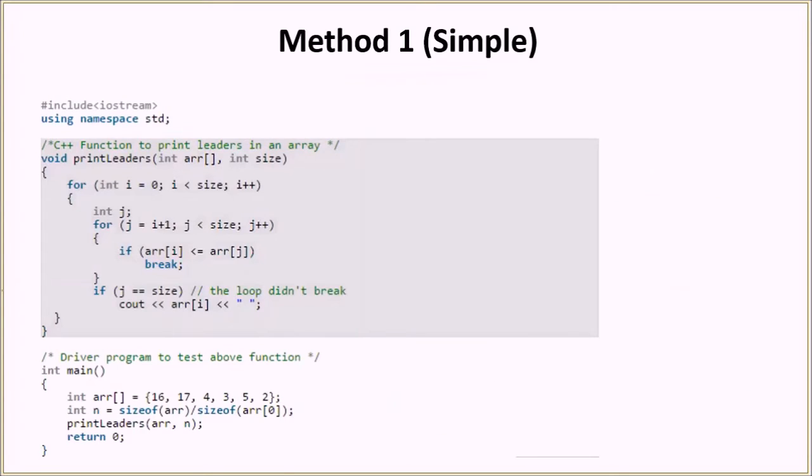So this is the code for the algorithm. For the brute force algorithm, we have an input array here. Then we calculate the size. Then we call the function print leaders, which takes as an argument the array and its size. So let's come to print leaders function. In this function, we have the input array and the size. Then this is the outer loop.